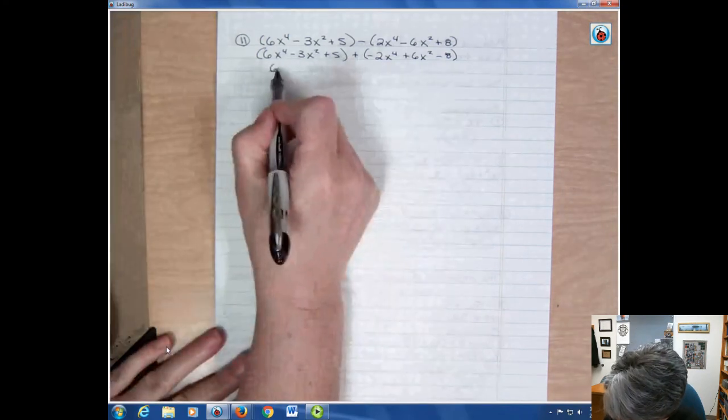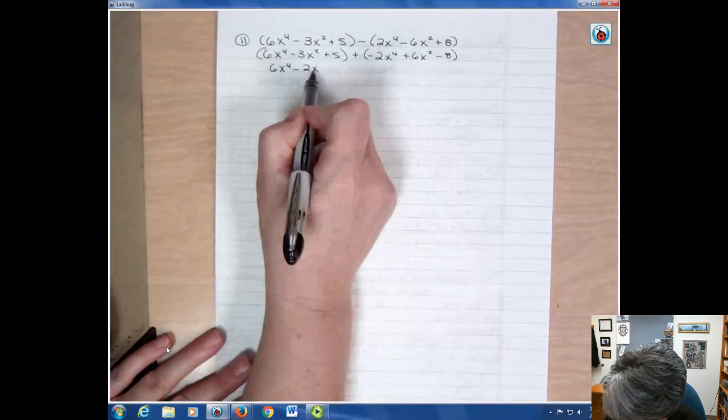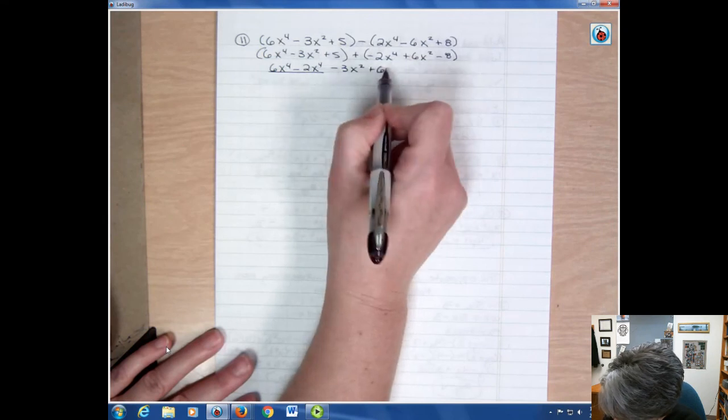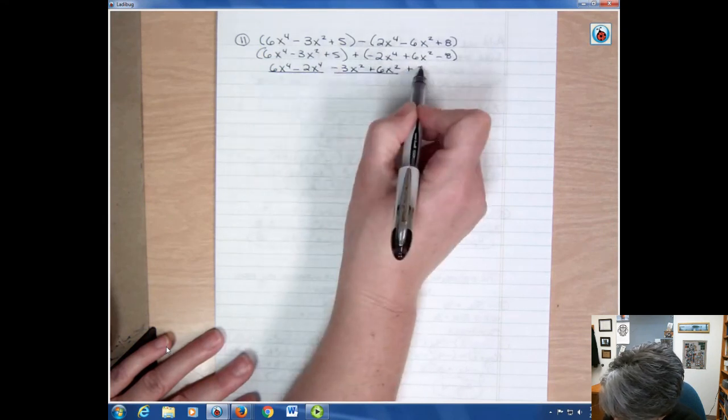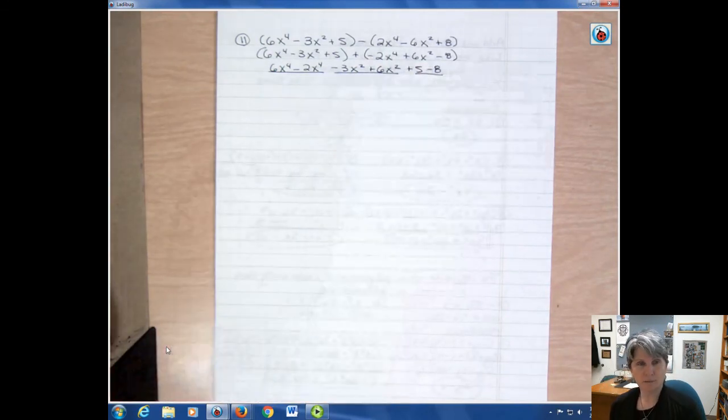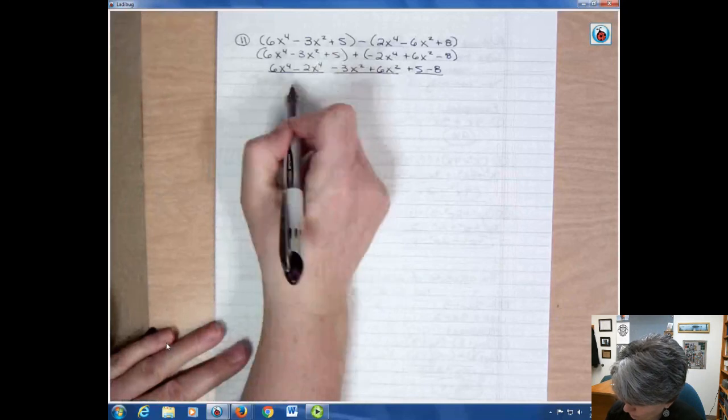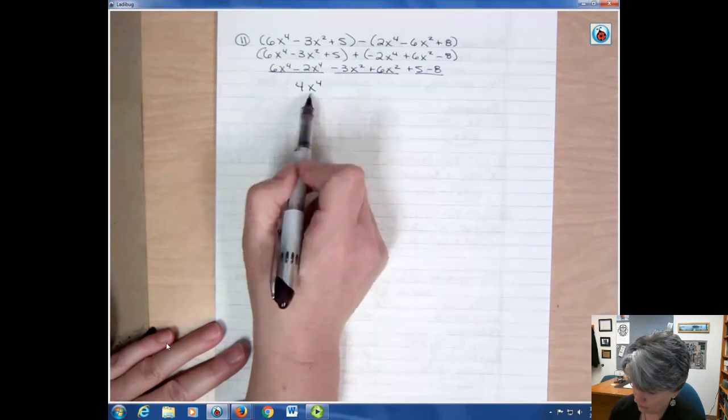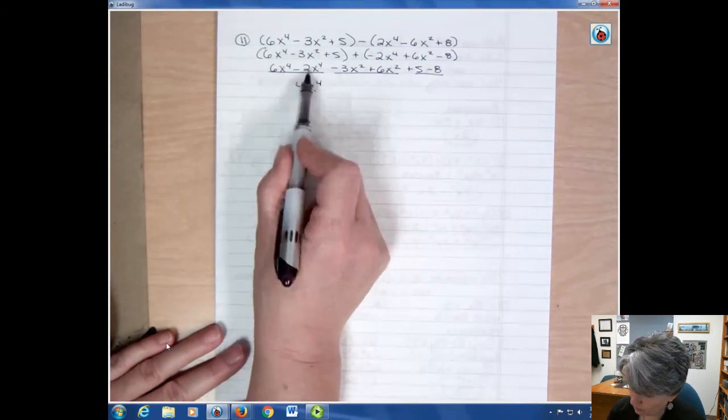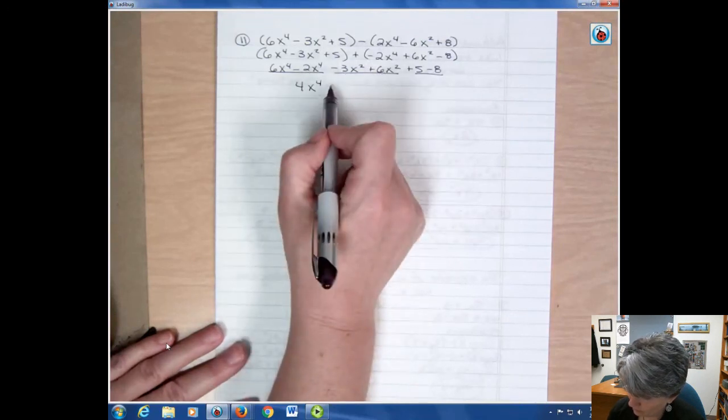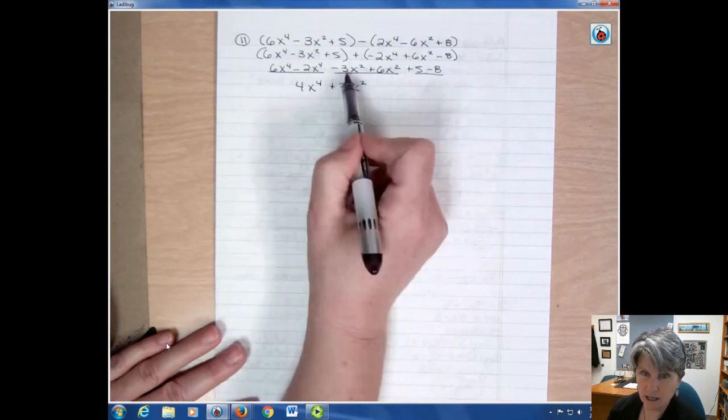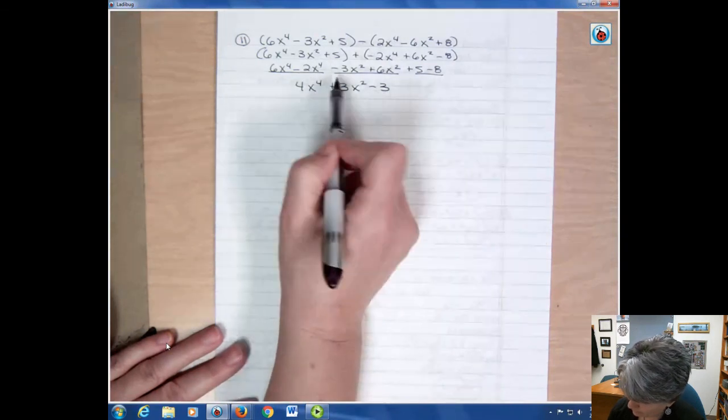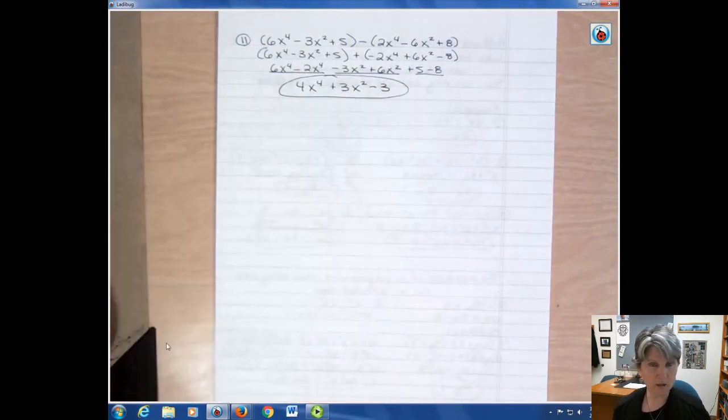We have 6x to the 4th minus 2x to the 4th minus 3x squared plus 6x squared plus 5 minus 8. Now I'm going to combine those. I have 6 minus 2, which is 4x to the 4th. Notice if I have 4th power terms, my answer is a 4th power term. I don't change the power, just the number in front. Negative 3 plus 6 is positive 3x squared. Like terms give a like answer. And 5 minus 8 is negative 3. This now is finished because I can't go any further when I have unlike terms. So that's it.